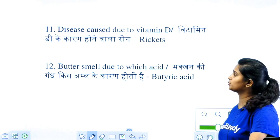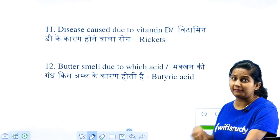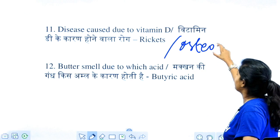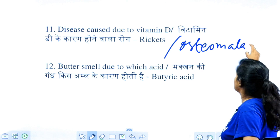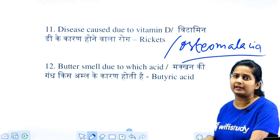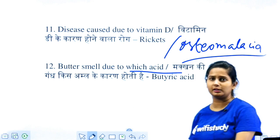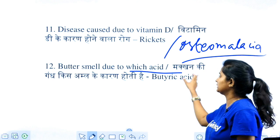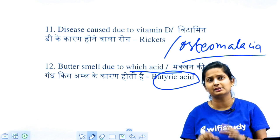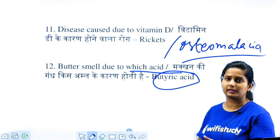Next, disease caused due to the deficiency of vitamin D. The disease caused is rickets and osteomalacia. Both involve weakening of bones. Regarding what kind of smell — the bad smell comes due to butyric acid.